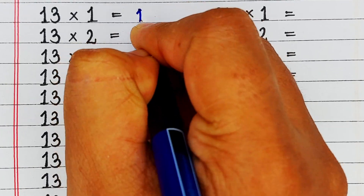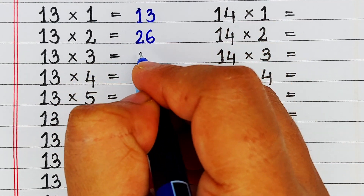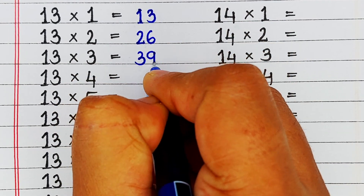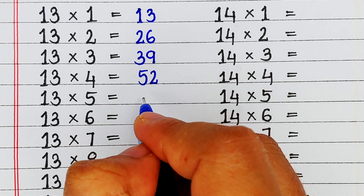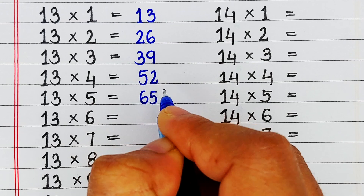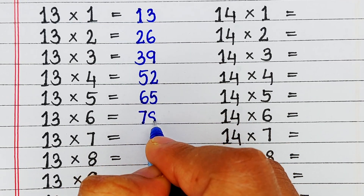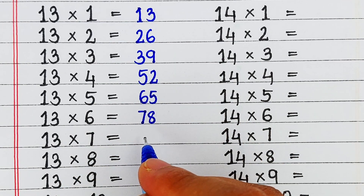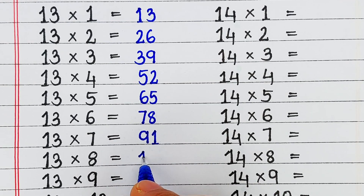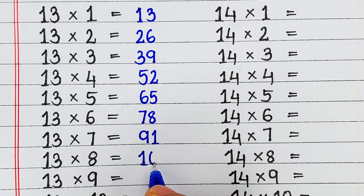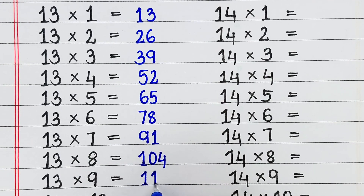Next is the table of 13. 13 1s are 13, 13 2s are 26, 13 3s are 39, 13 4s are 52, 13 5s are 65, 13 6s are 78, 13 7s are 91, 13 8s are 104, 13 9s are 117.